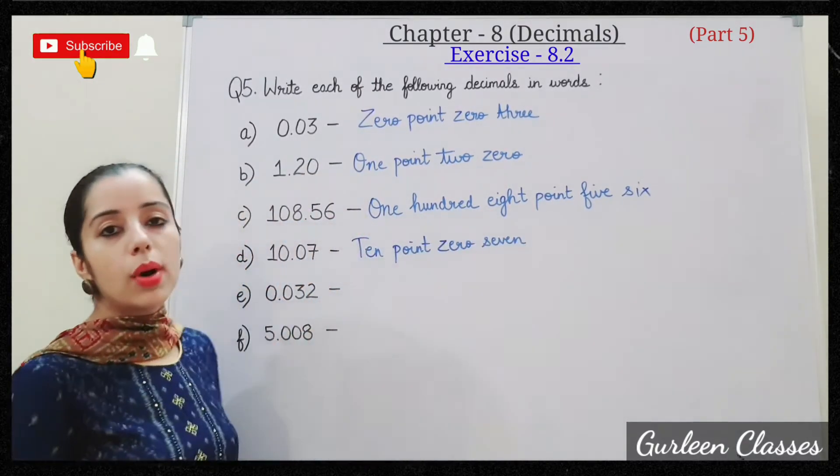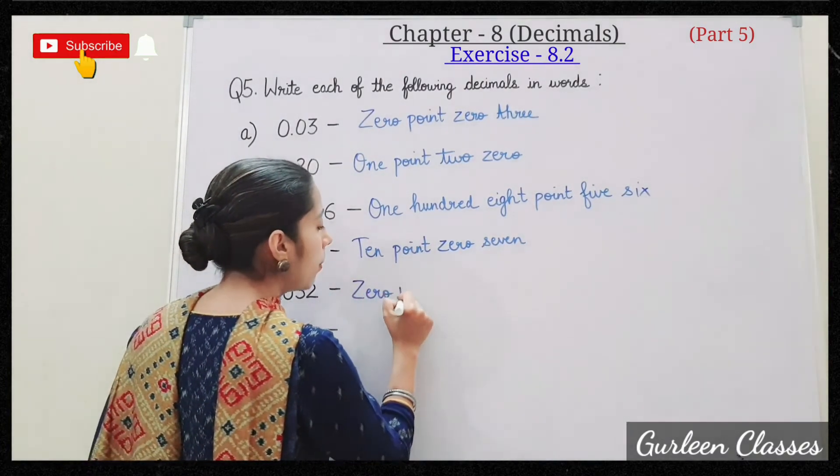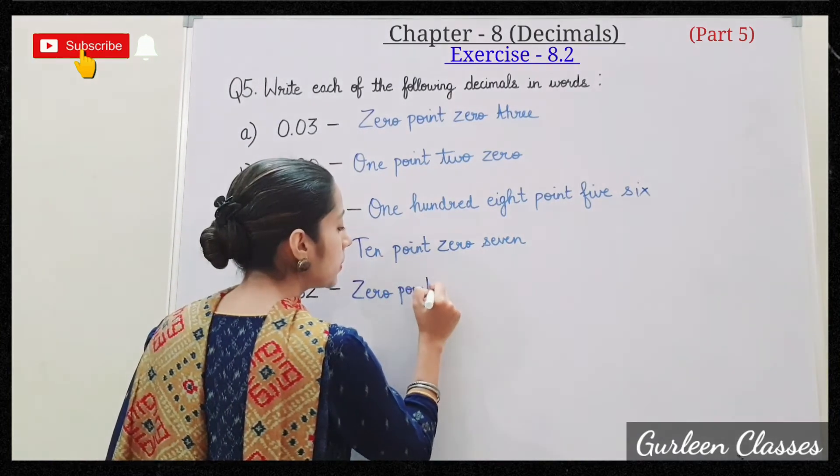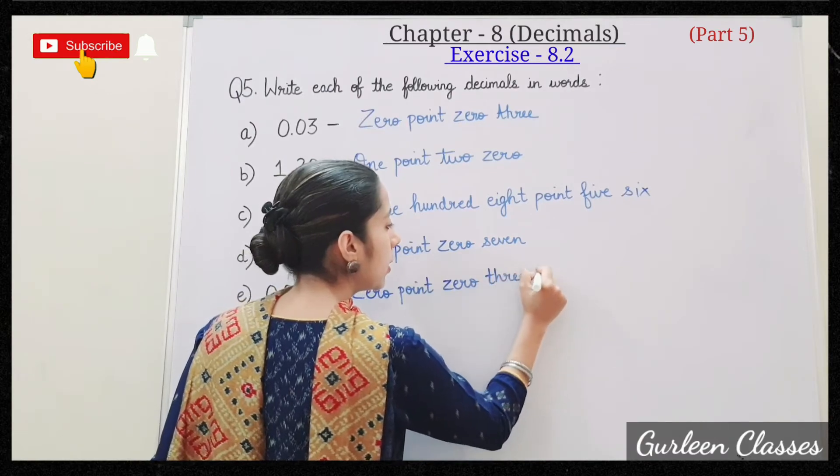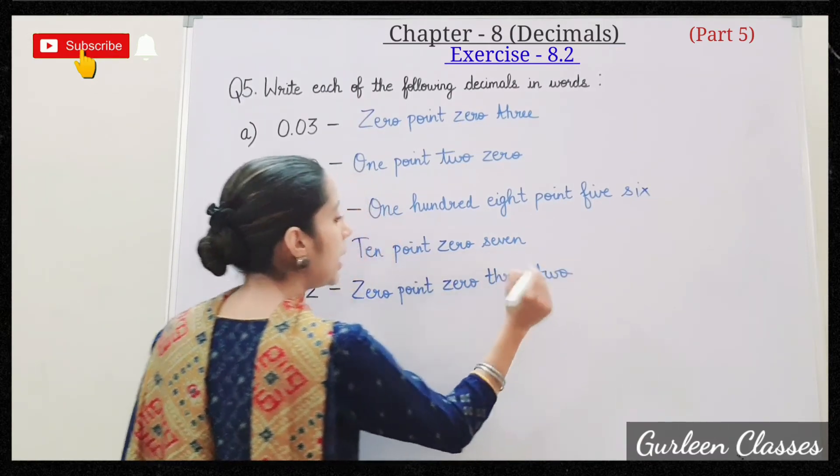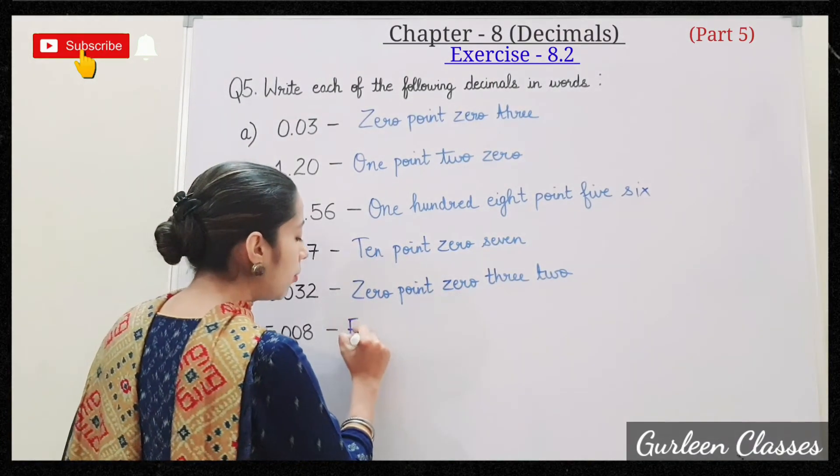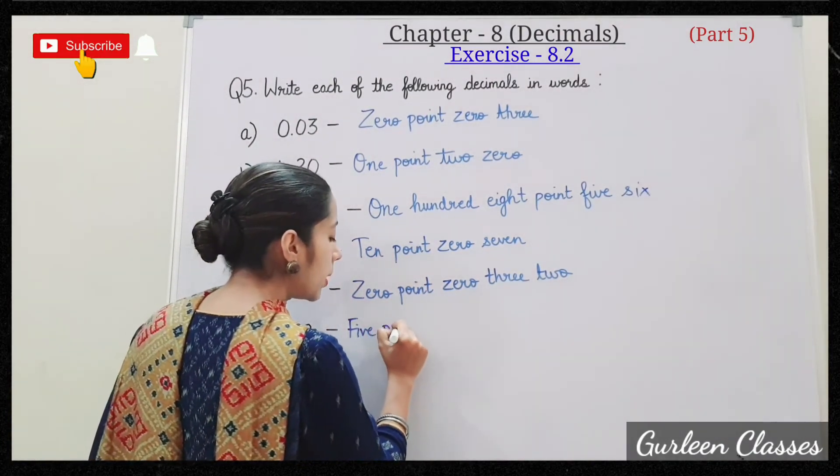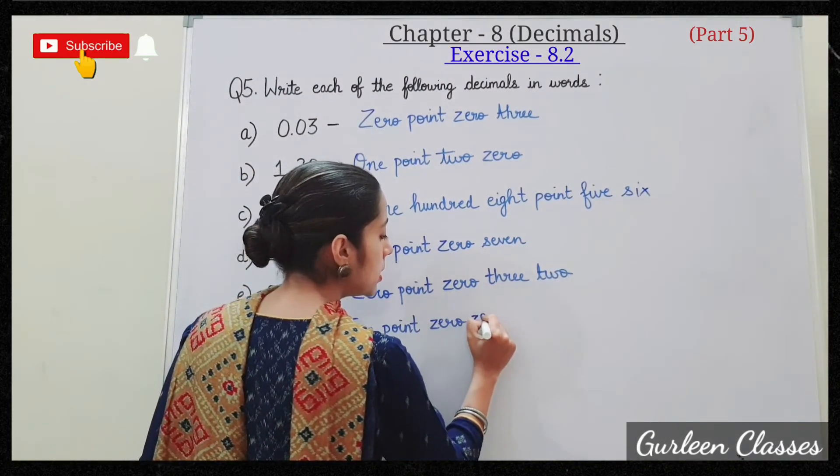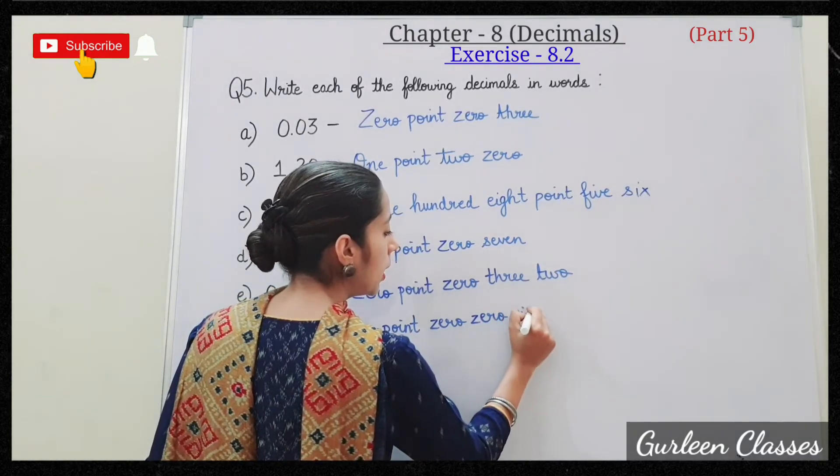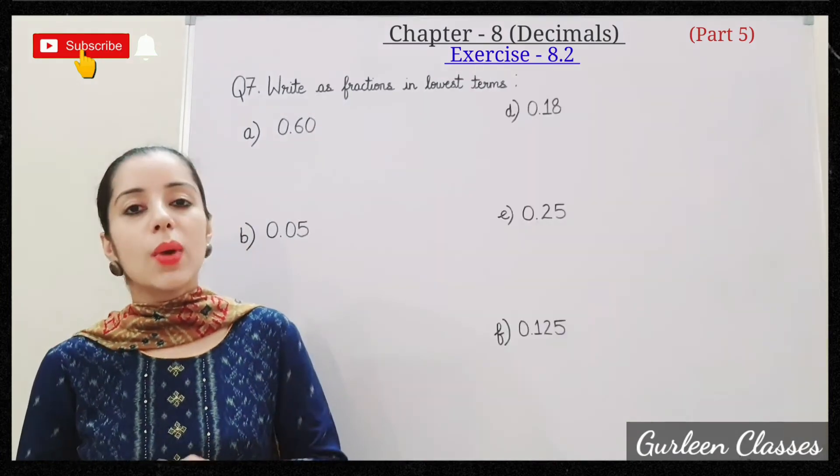Next part: 0.032. So it will be zero point zero three two. Next part: 5.008. So write here: five point zero zero eight. So these decimals we have written in words.